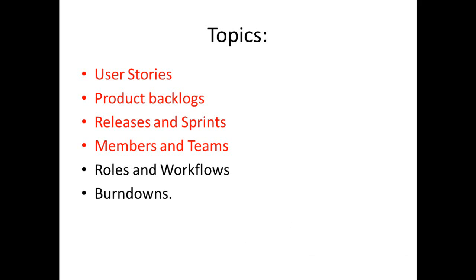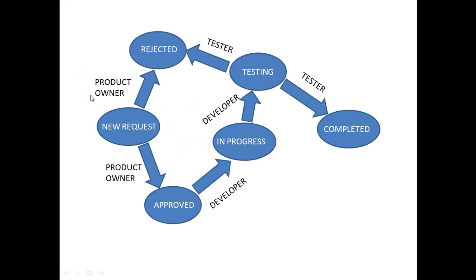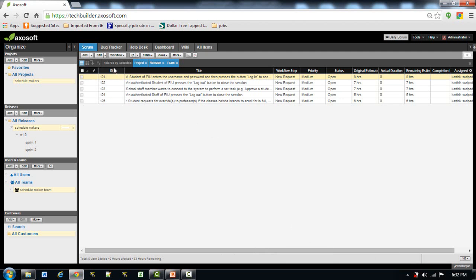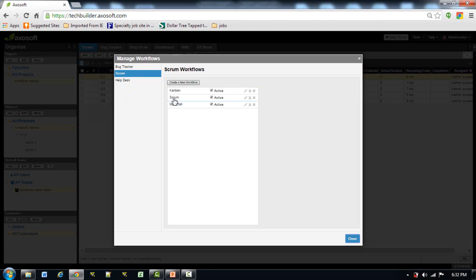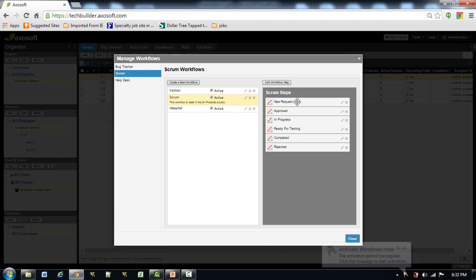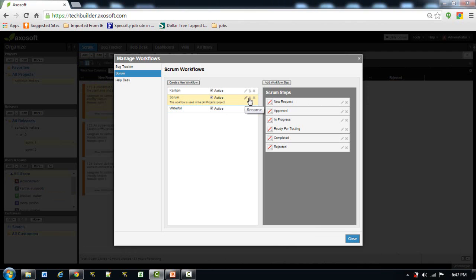Now that we've assigned members and teams, we'll see how to assign custom roles and custom workflows to follow the agile principle. For example, in this workflow: from New Request, the product owner will either approve or reject the user story. When approved it goes to In Progress by the developer, then from In Progress it goes to Testing. Testing can be rejected or approved, and when approved it goes to Completed. Initially Accessoft doesn't provide this infrastructure — we need to create it by customizing our workflows. To customize a workflow, go to Manage Workflows.